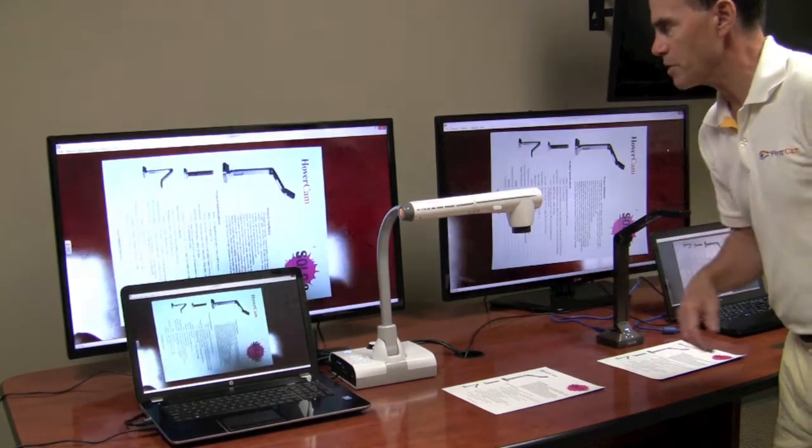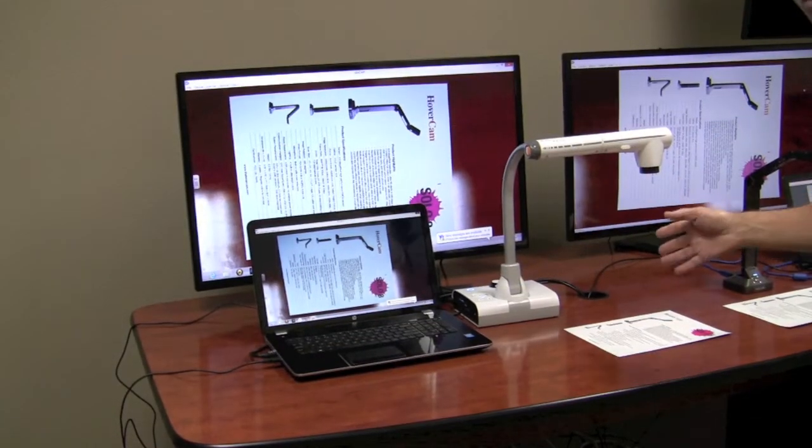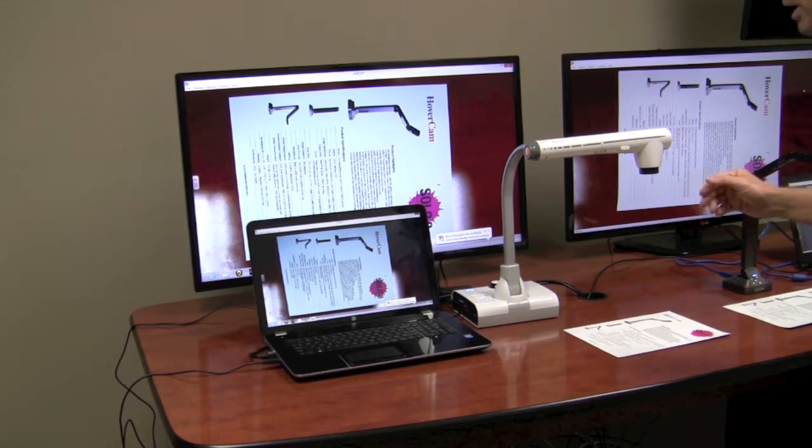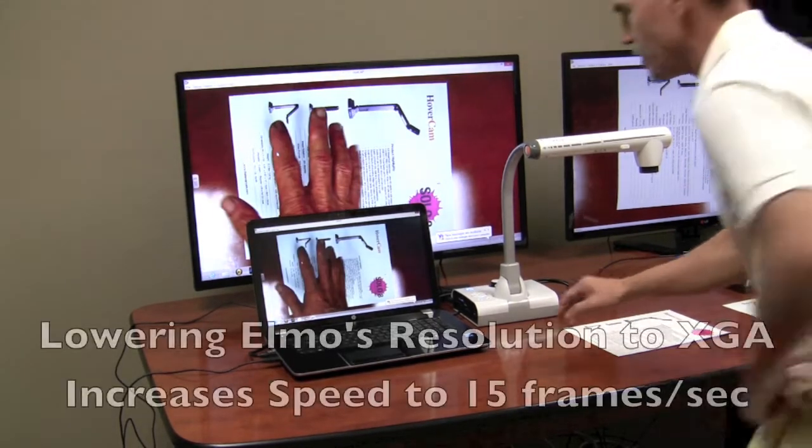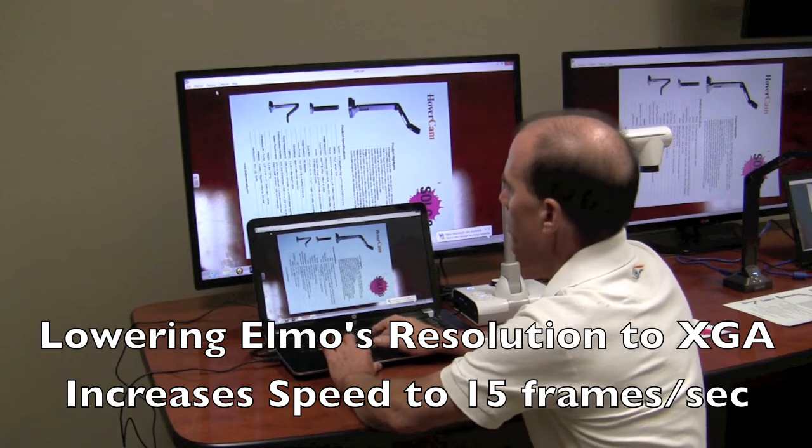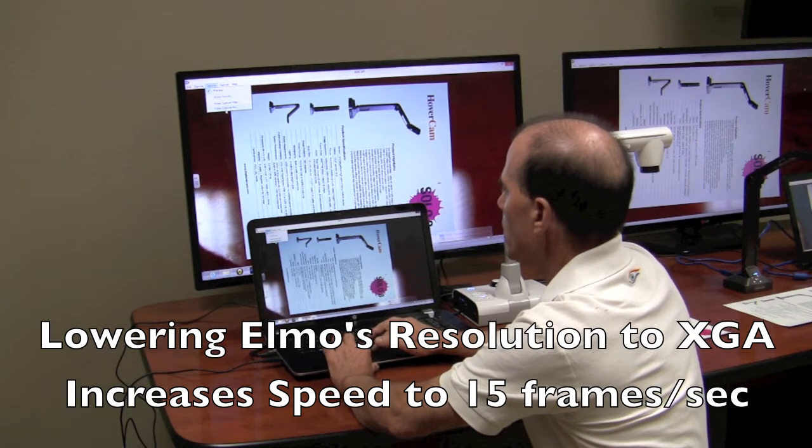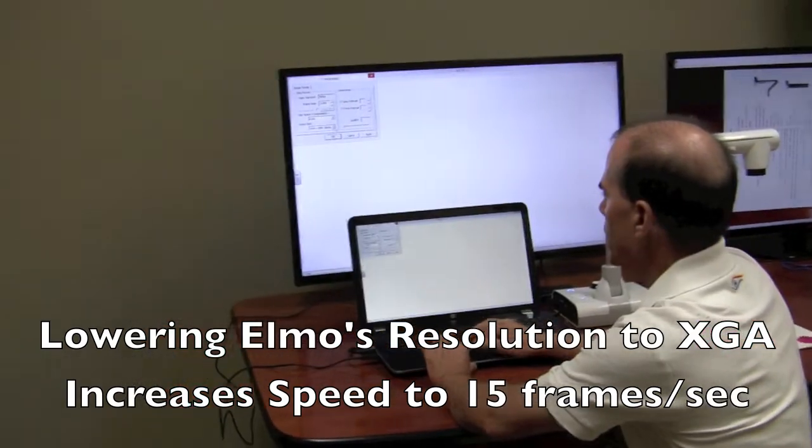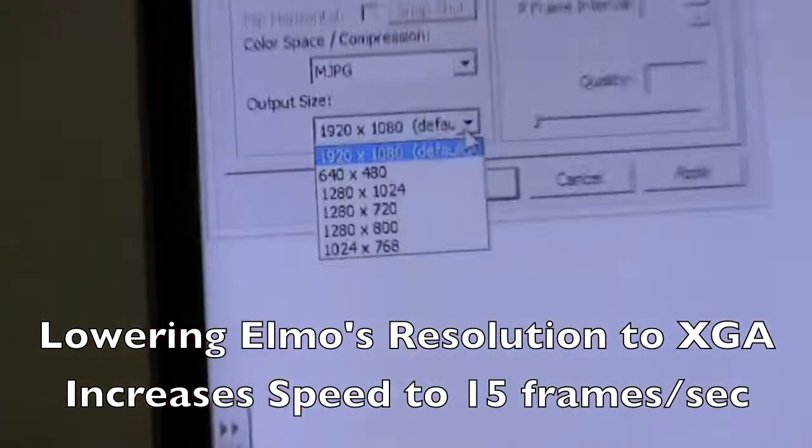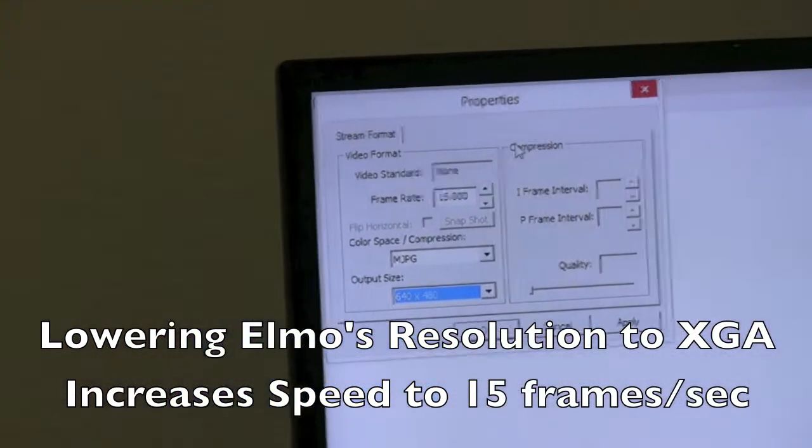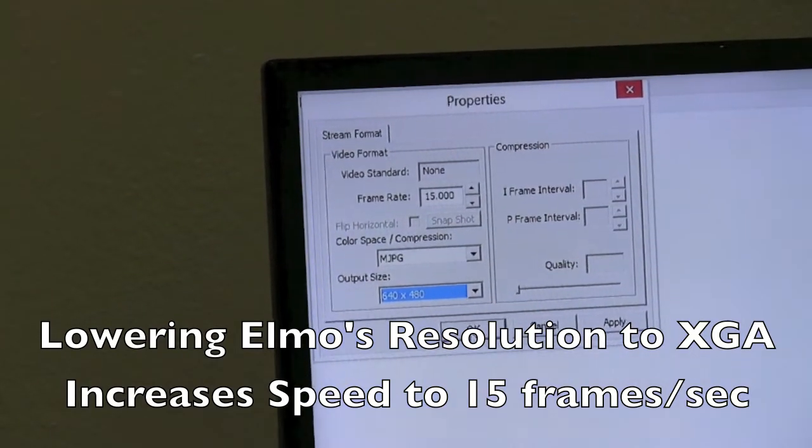And this is going over USB. In fairness to the ELMO, I'm going to adjust some settings here so that it can actually go faster. So in my software, I'm going to come in here and select a lower resolution so that it can go faster. In fact, we'll pick a VGA resolution at 640x480 and we'll be able to get a frame rate of close to 15 frames per second.